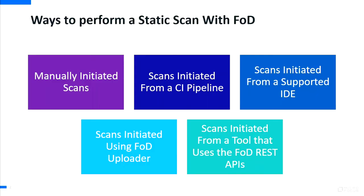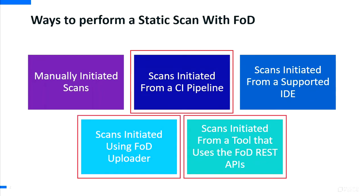There are five ways in which you can perform static scans with FOD. You can perform a manually-initiated scan or scan from a supported IDE. But there are three ways in which you can actually scan from the CI pipeline, and we're going to talk about all three of those today.